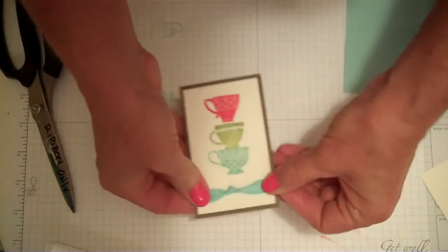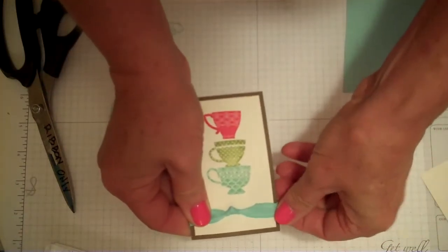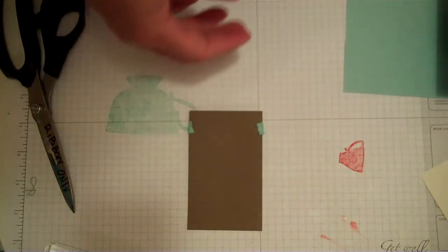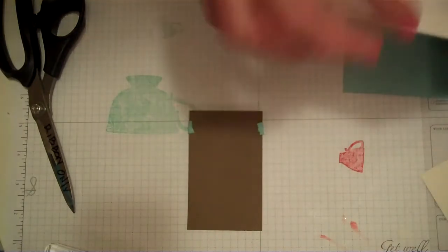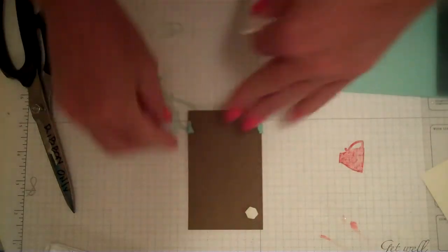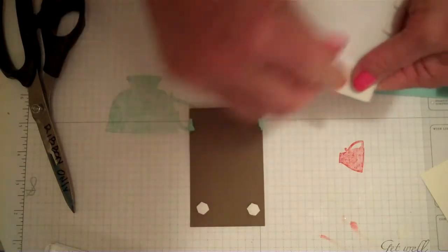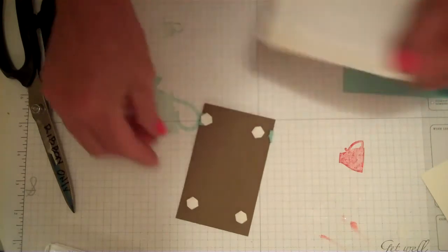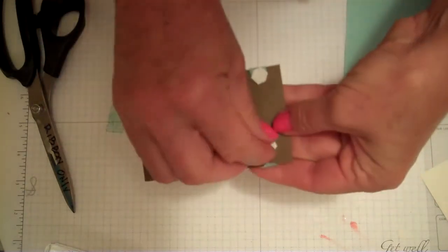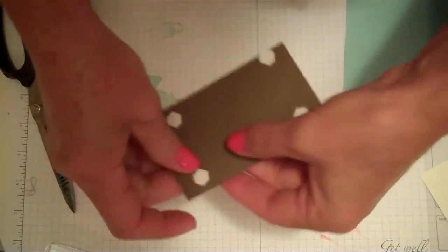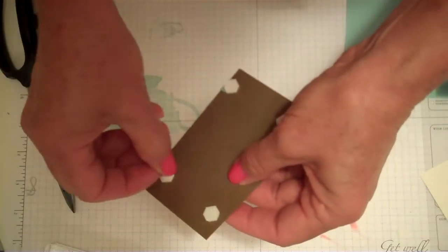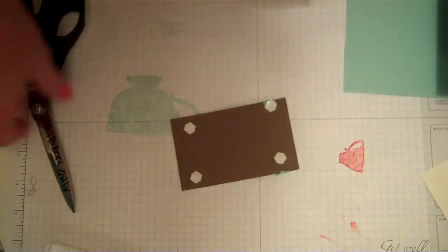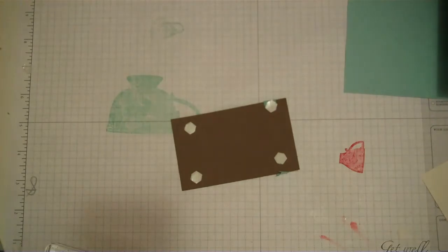Now on the back of this I'm going to put some dimensionals because I want to pop it off. The ribbon sometimes binds things, so when you put dimensionals behind there, this makes it easier. I didn't do a very good job with my glue dots, did I? Everything keeps popping off. I may have to add another glue dot, which I think is what I'll do.